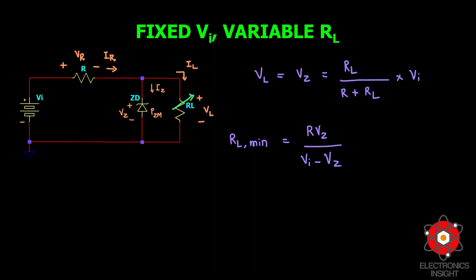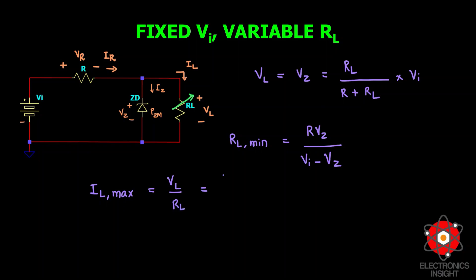This condition of minimum load resistance gives us the maximum load current, because when resistance is low the current through the load resistor is maximum. Therefore, RL_min gives IL_max, which can be determined as VL divided by RL_min, where VL equals VZ.